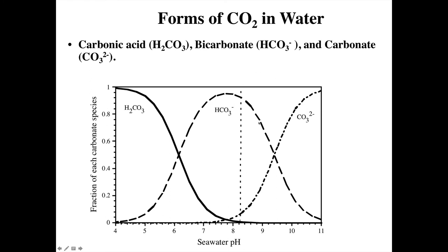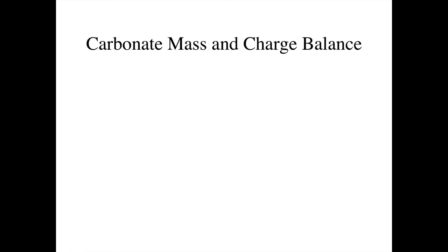As we increase the pH further, the bicarbonate concentration decreases and the carbonate concentration increases. They cross at the second pKa, when pH equals pKa2. We can also see that at the pH of the ocean, at about 8.2, we expect to have mostly bicarbonate with a little bit of carbonate.